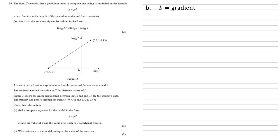We can find the gradient by doing the difference in the y coordinates over the difference in the x coordinates. So that's 0.45 from the top right coordinate minus the zero from the bottom left and 0.21 minus negative 0.7.